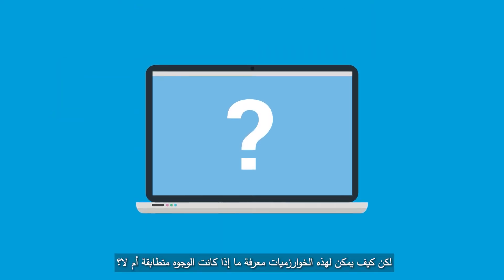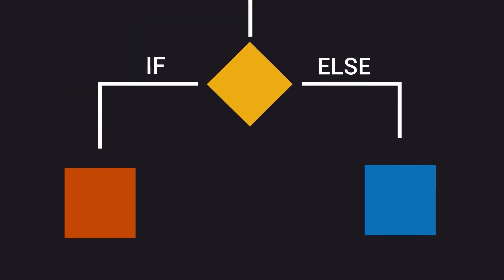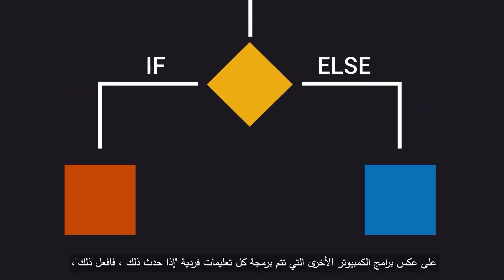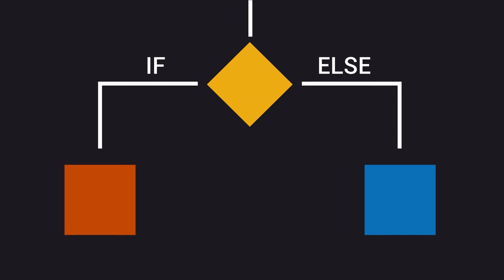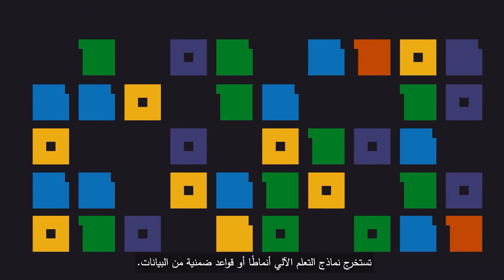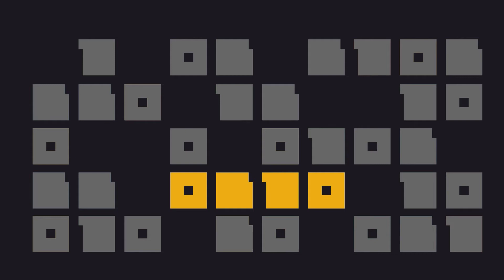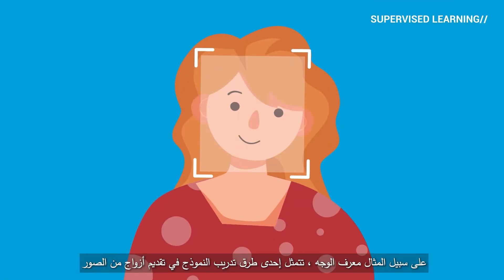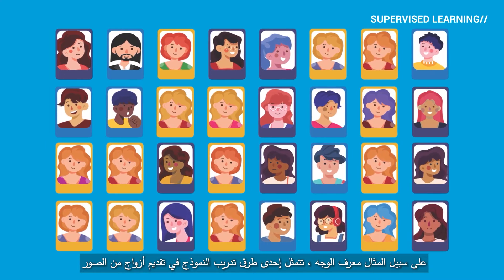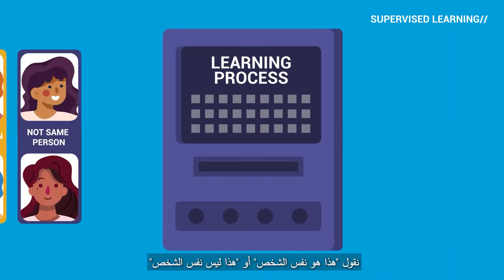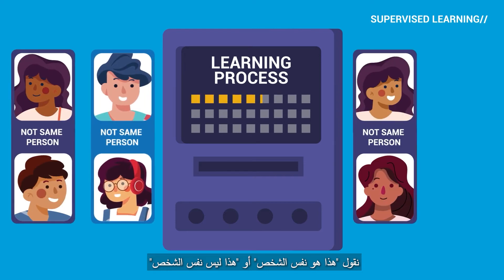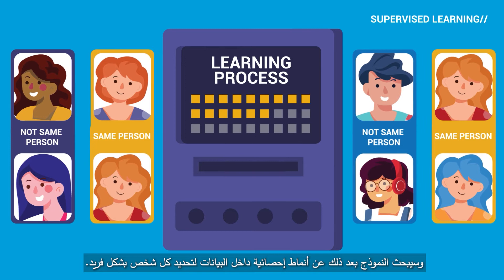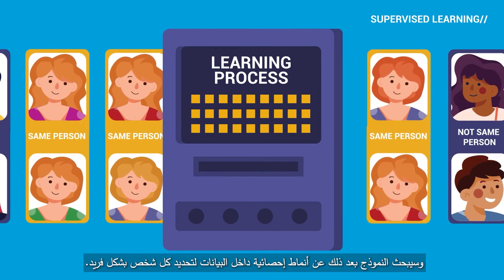But how can these algorithms know if faces match or not? In contrast with other computer software where each individual instruction is programmed — if this happens, then do this — machine learning models extract patterns or implicit rules from data. This can be done through supervised learning, where the algorithm learns by example using human-labeled data. In the face ID example, one way to train the model would be to feed it pairs of images, telling it 'this is the same person' or 'this is not the same person,' and the model will then seek statistical patterns within the data to identify each person uniquely.